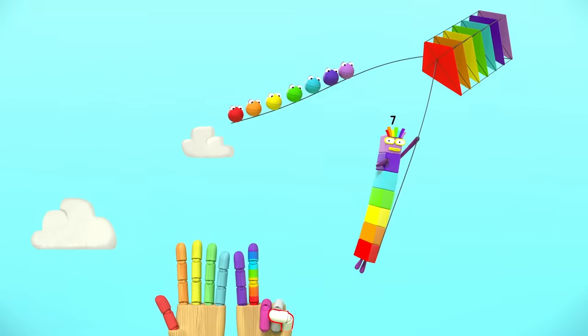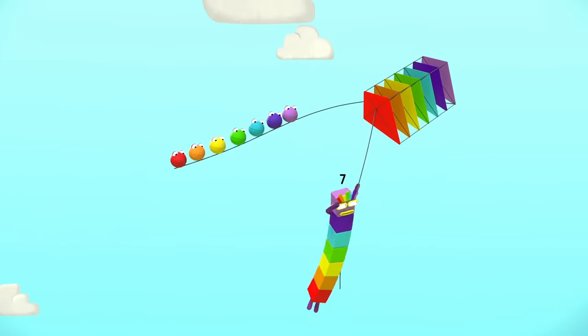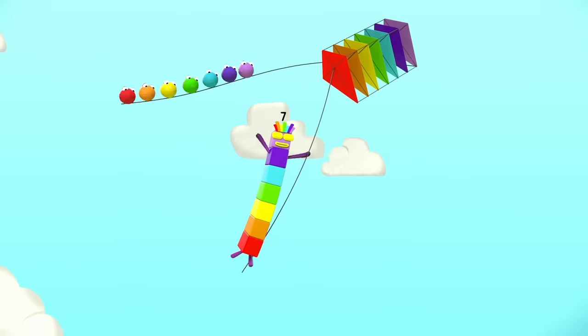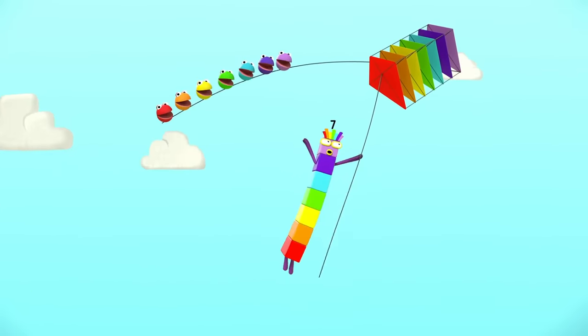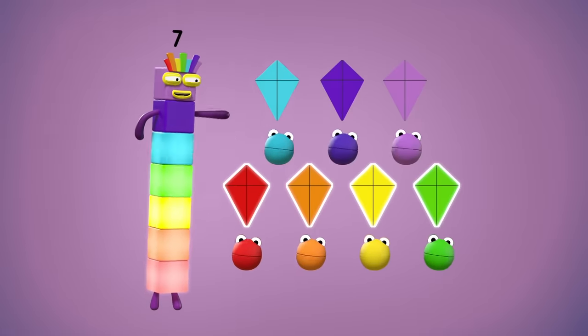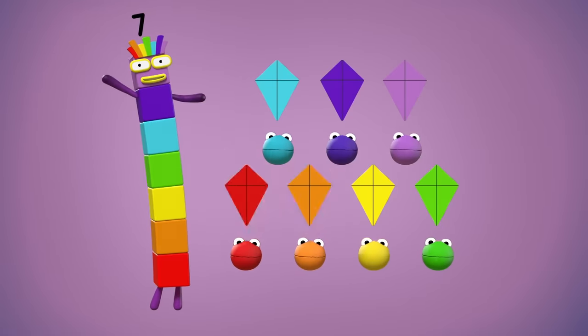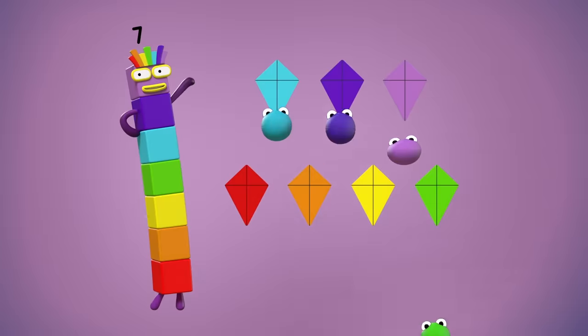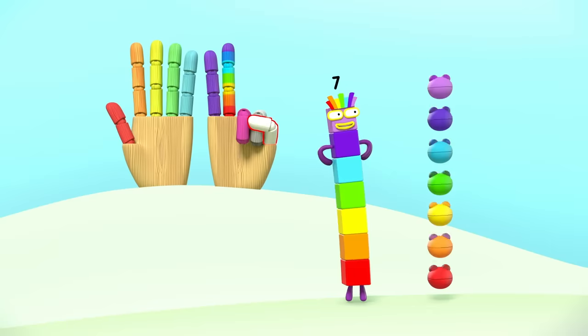Seven numberblocks and me, counting everything we see. Flying a kite, rainbow kite, turning on the light, rainbow light. Seven numberblocks and me. One, two, three, four, five, six, seven, seven kites. One, two, three, four, five, six, seven, seven lights. Seven numberblocks and me.